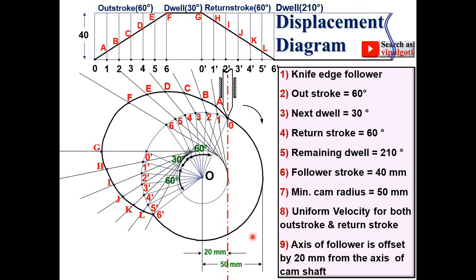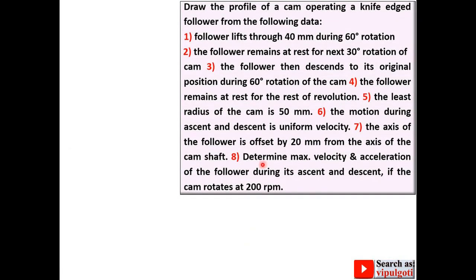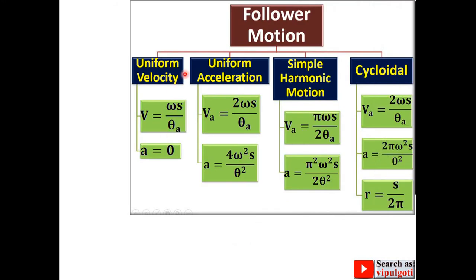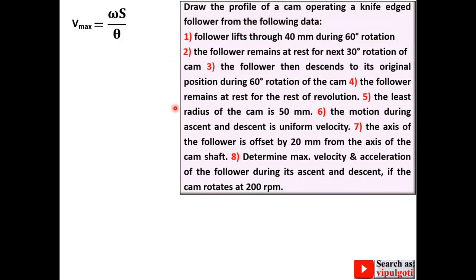Now the second part — the calculation. Determine maximum velocity and acceleration of the follower during its ascent and descent. Since the motion is uniform velocity, use the formula V = ω·S/θ. The angular velocity ω = 2πN/60, and N is given as 200 RPM. Substituting, ω = 20.94 rad/s.